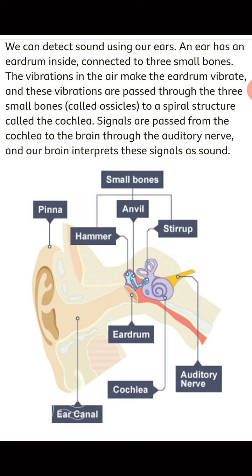Let us see the parts of the outer ear in detail. The outer ear consists of the pinna, as marked in the image, and the ear canal. The ear canal is also called the auditory canal — auditory means sound — and it is the channel through which sound can travel. So the pinna and the auditory canal together make up the outer ear.